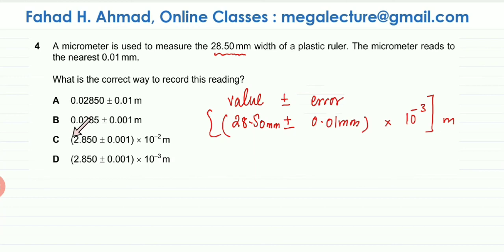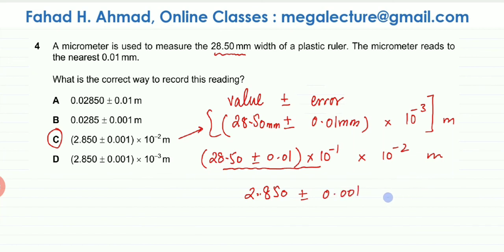Now if you carefully look at each of the values you would notice that the one that is equivalent to this is option C. Option C is the same as this because what they've done is instead of multiplying it by 10 power minus 3, they have first multiplied the entire thing by 10 power minus 1 and then multiplying it by 10 power minus 2. If you multiply it by 10 power minus 1 you're going to get 2.850, the other value is going to be plus minus 0.001, and then this would be multiplied by 10 power minus 2 meters. So option C is going to be the correct expression for this particular question.